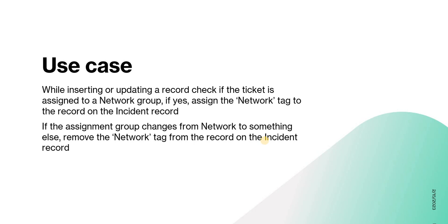Now let's discuss what use case we are building. We will create a tag called 'network' that would be automatically attached to incidents which have the assignment group as 'network'. If a record is inserted or updated it will not affect any existing record if you are not updating it. But if the assignment group is updated on a new or existing incident, it should automatically have a tag called network, and if we remove the network assignment group from the incident the tag should also disappear.